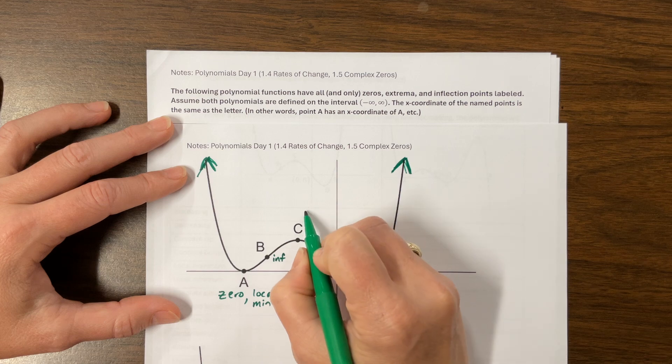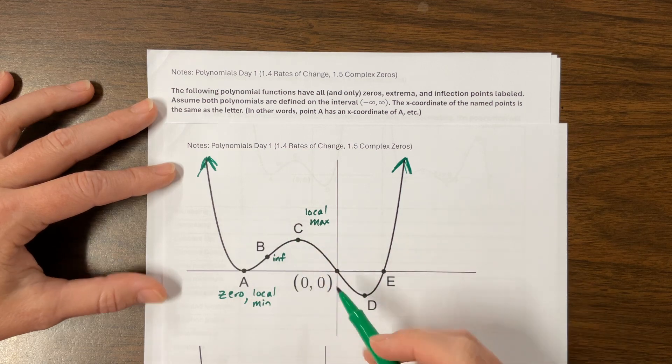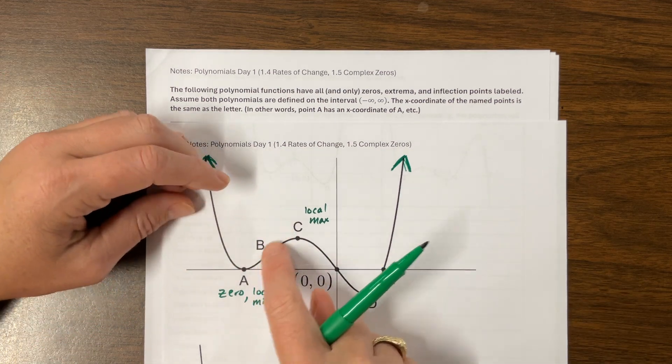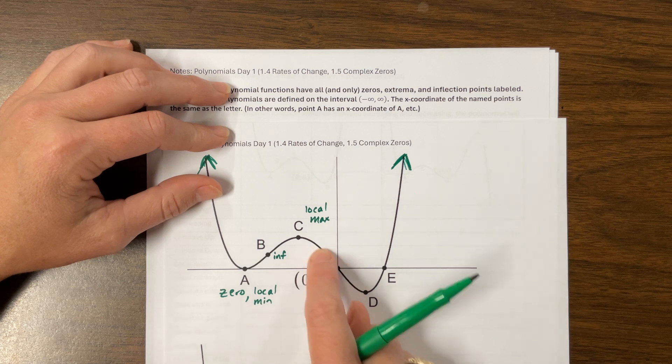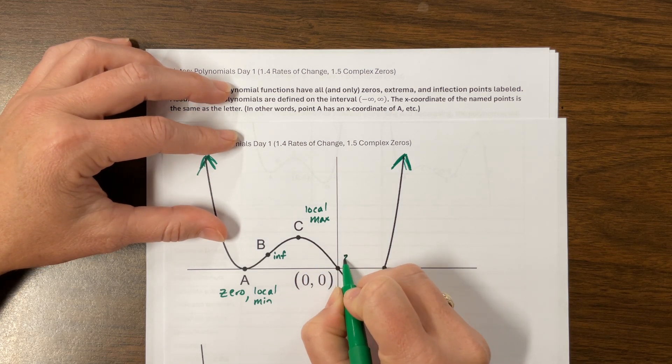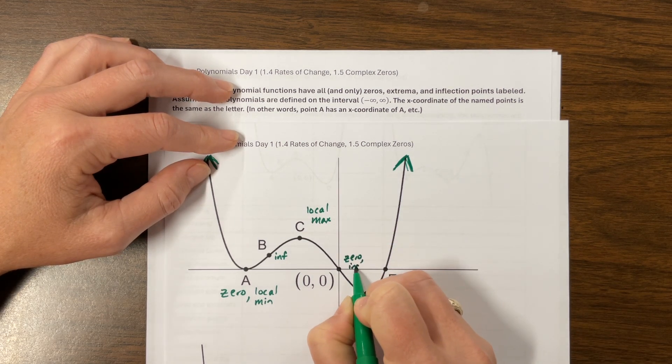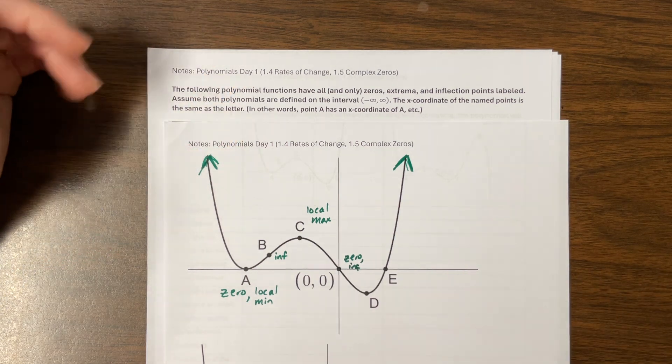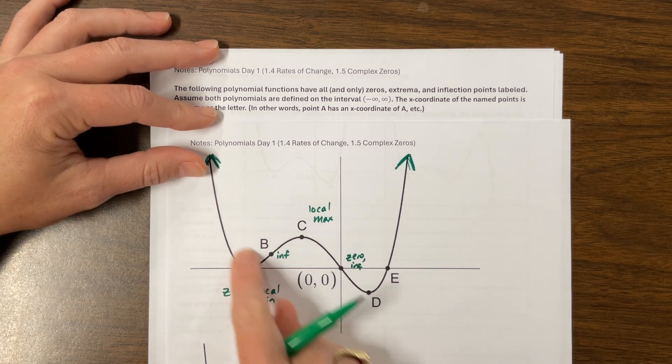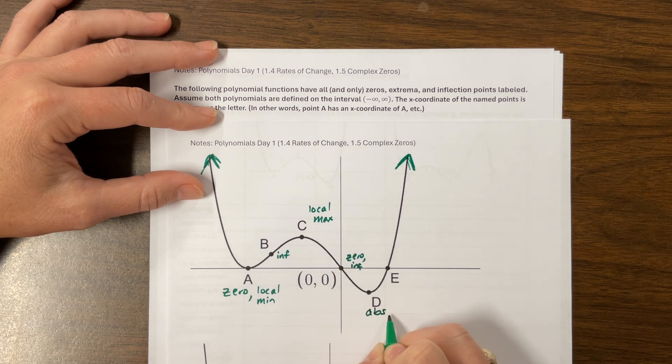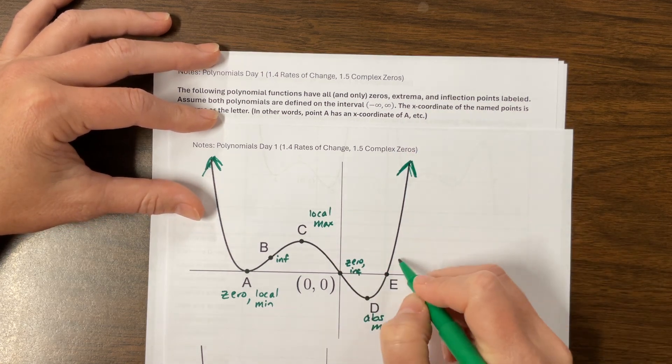C is going to be a local maximum. This zero at (0,0), notice here my graph is concave down, and then it's concave up. And so this point (0,0), since I didn't label anything else in here, this (0,0) is a zero and it's also an inflection point. This one is not only a local minimum, but it is also the absolute minimum of the whole graph. Absolute minimum. And E, notice the graph doesn't change concavity again, so it's not an inflection point. This E is going to be a zero.